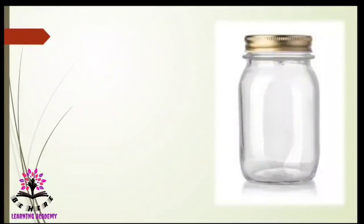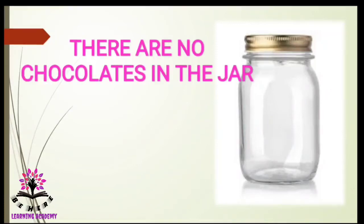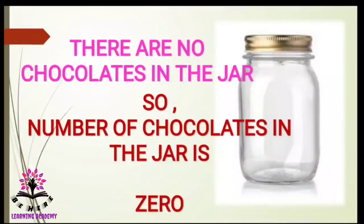What is this? This is an empty jar. There are no chocolates in that jar. This is an empty jar. So, we can say that there are no chocolates in the jar. The number of chocolates in the jar is 0.